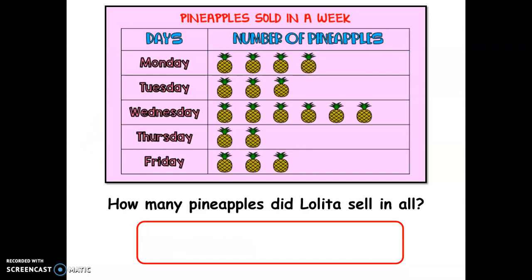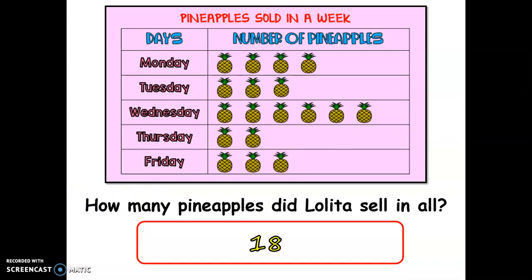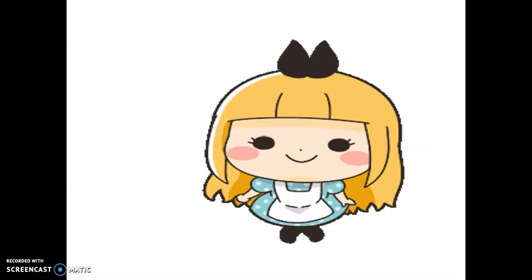And how many pineapples did Lolita sell in all? We're going to count all the pineapples, which is equivalent to one. On Monday: four. Tuesday: three, so that's seven. Wednesday: six, so we have 13. Thursday: two, so it's 15. And Friday: three, so we have 18. Great, it's 18. Now you already know how to use and analyze a pictograph.